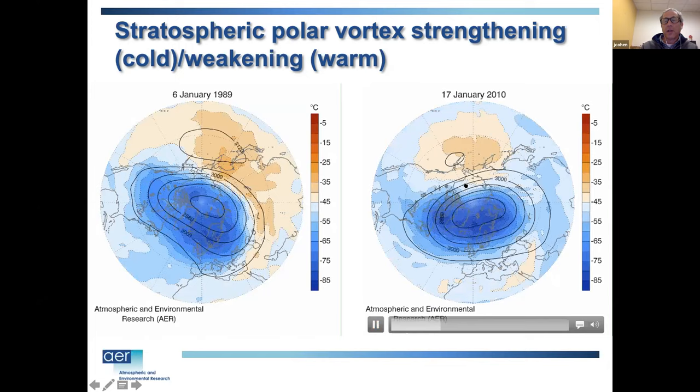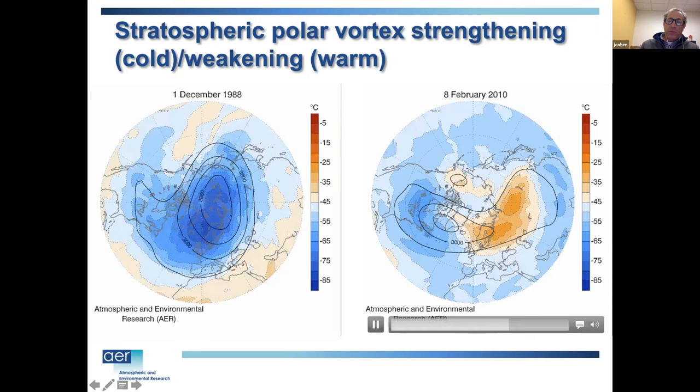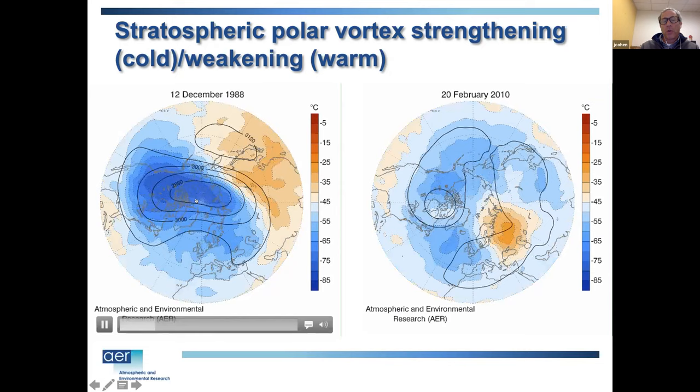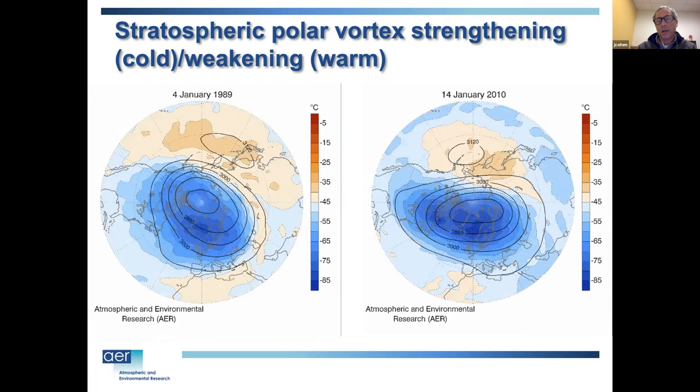When the vortex starts strong, the cold air is confined to the Arctic. But then warm air rushes into the Arctic — the oranges — and that cold air gets displaced to lower latitudes, with blues now showing up across the mid-latitudes. We also see the coherent polar vortex split into at least two pieces, a polar vortex split, which is what we've seen in the past two winters.